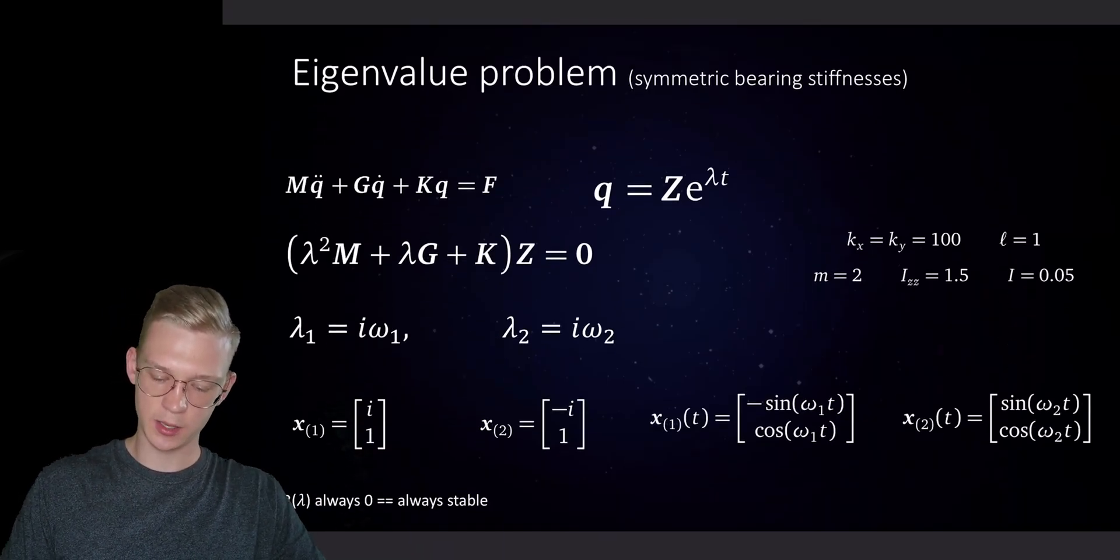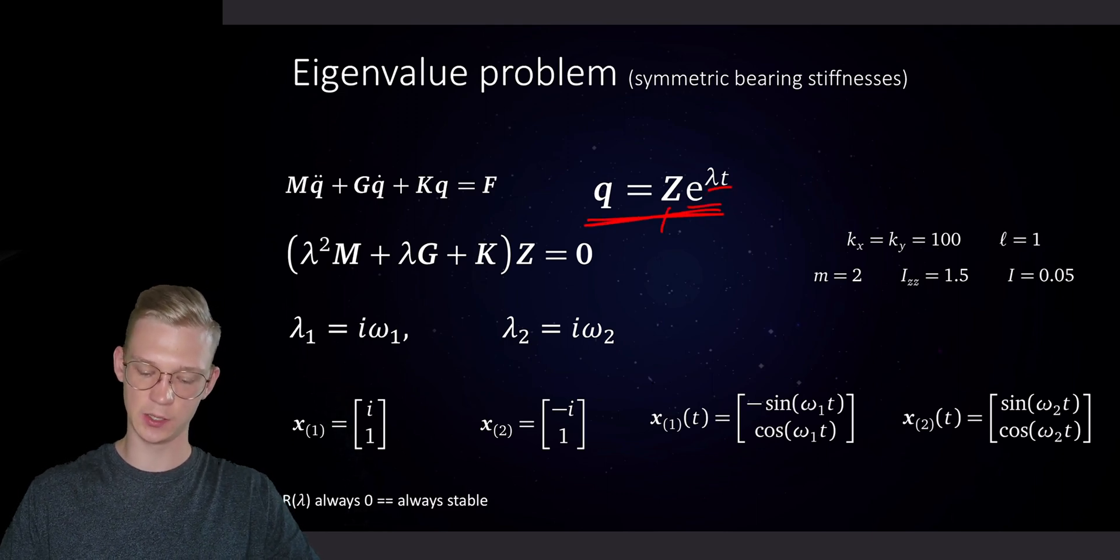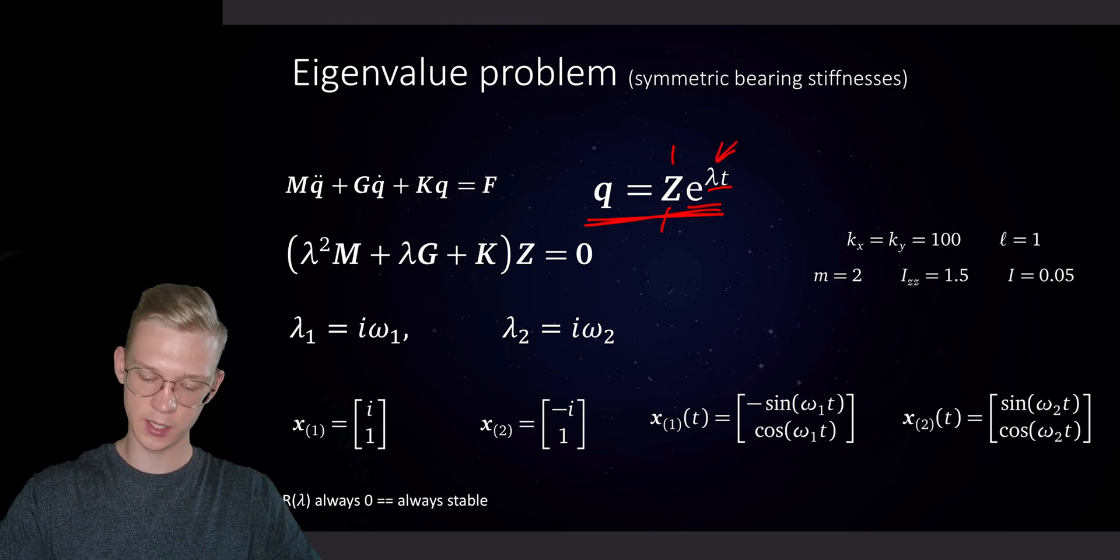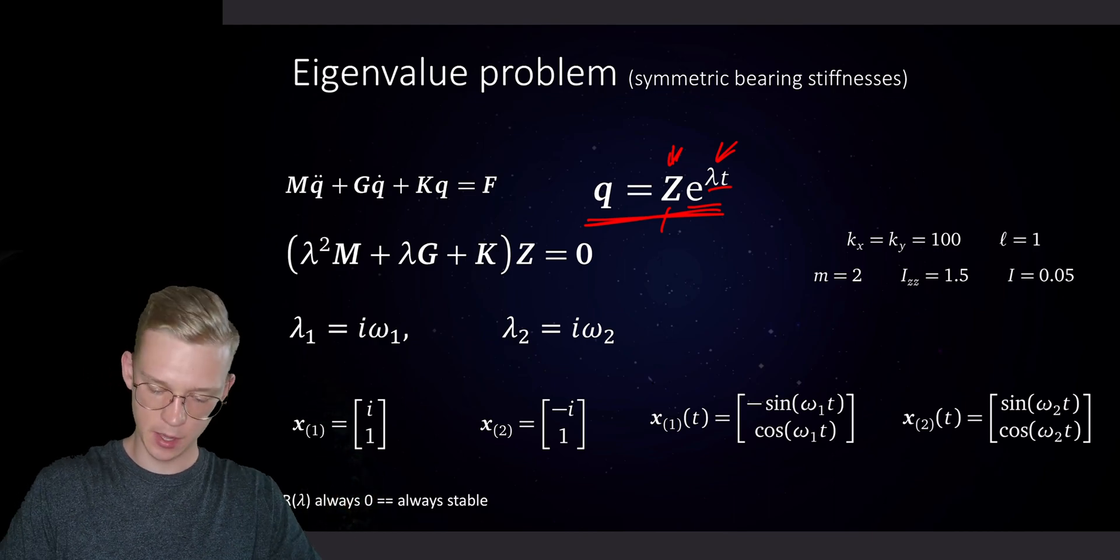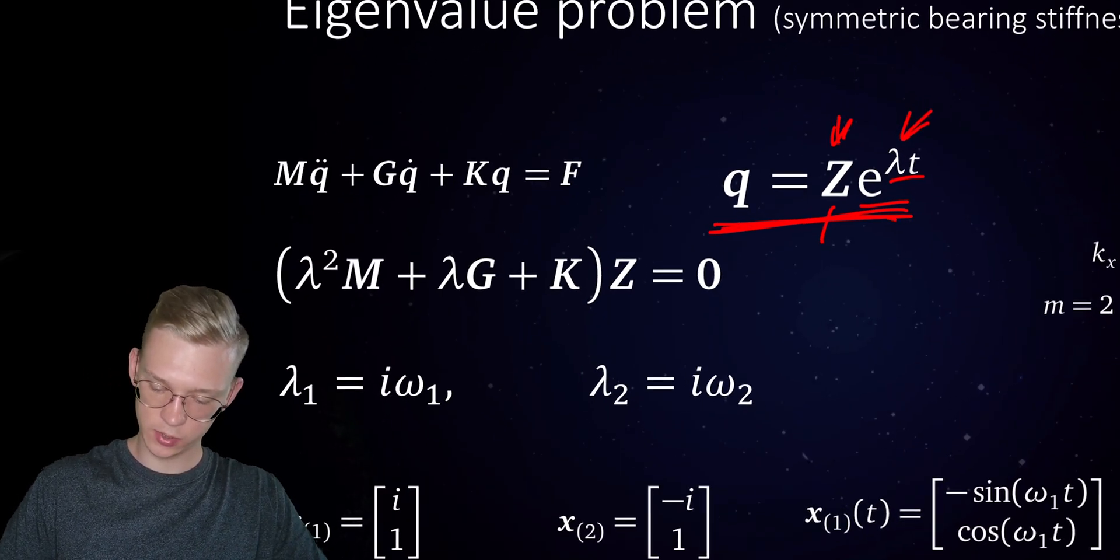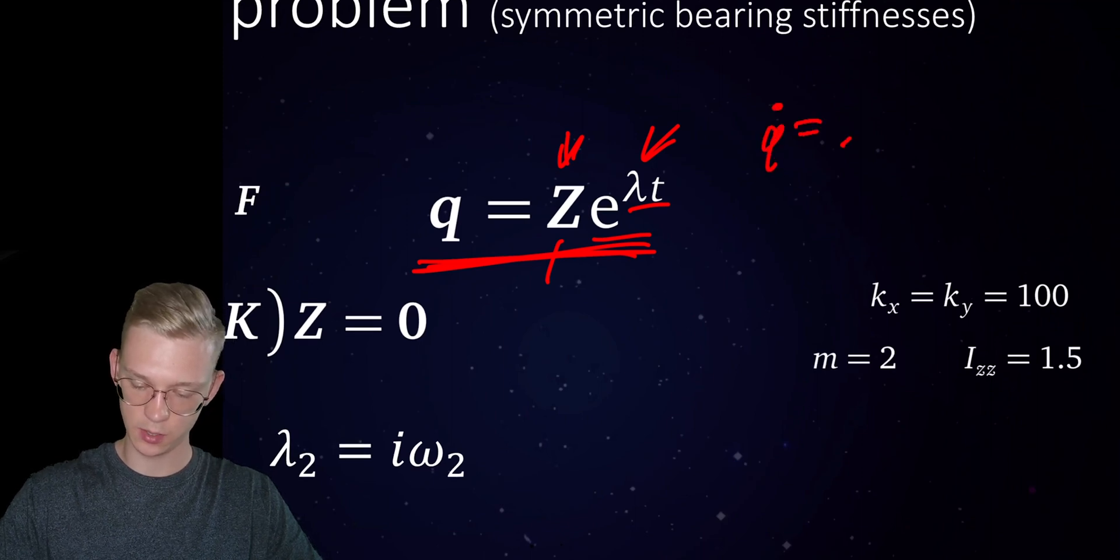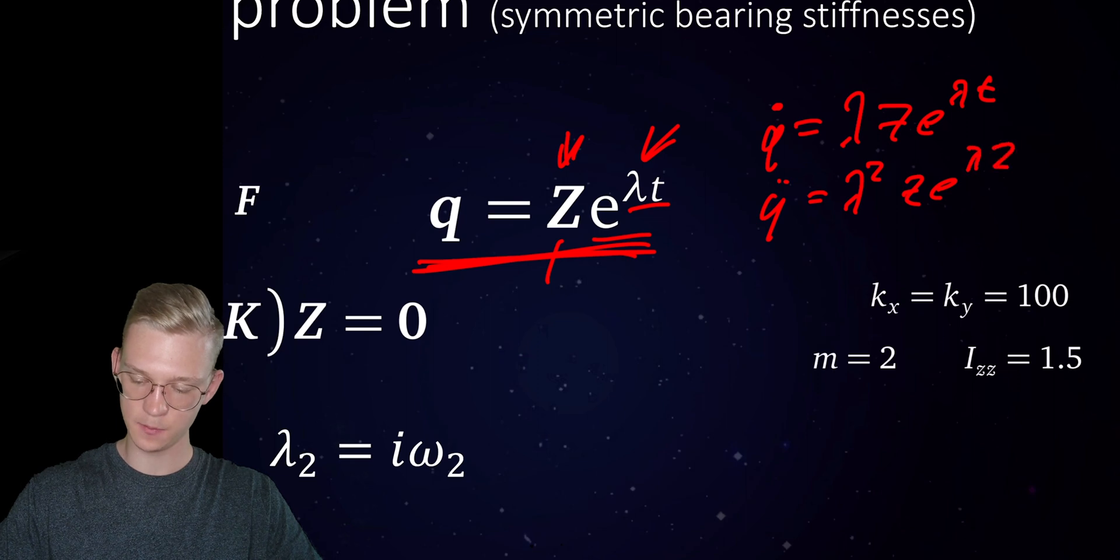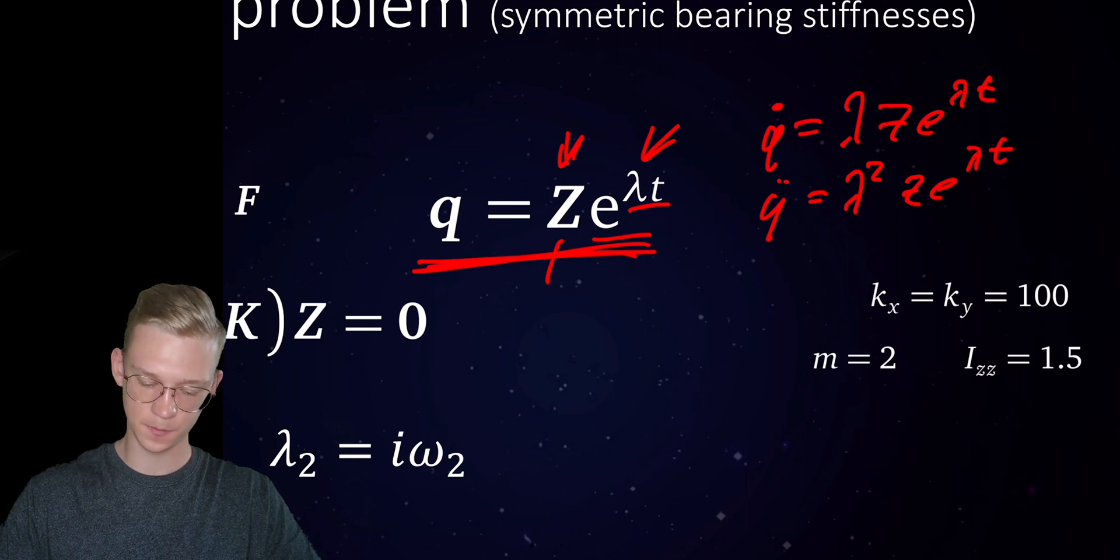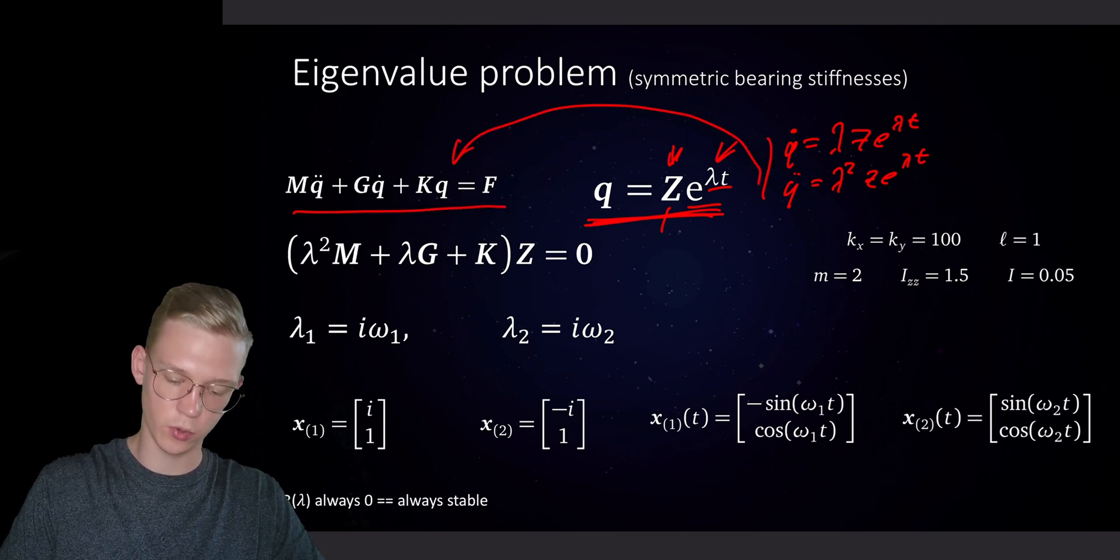We propose a solution q that is z times exponential lambda t. And in this case, lambda and z can be complex because we can have a phase shift. So this is the very general solution. So we can use this proposed solution and get q dot is equal to lambda z e lambda t and q double dot is equal to lambda squared z e lambda t. And we insert those q's into this equation.